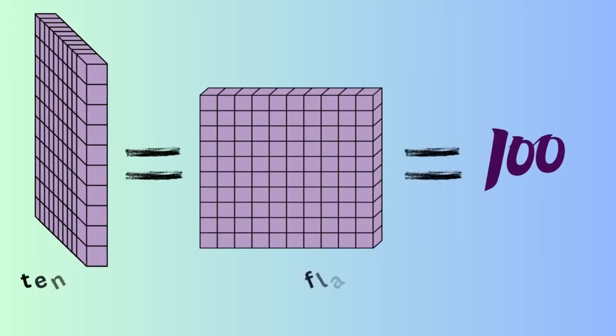When we have 10 longs, we can trade them for a flat. The flat represents 100.